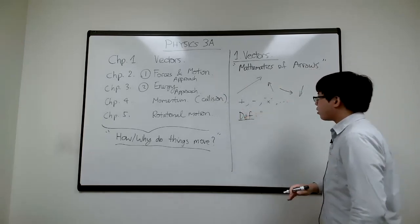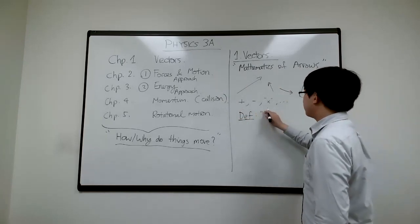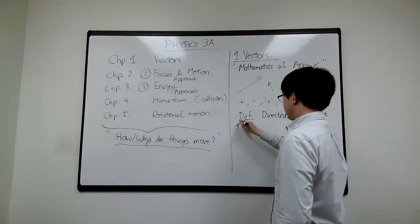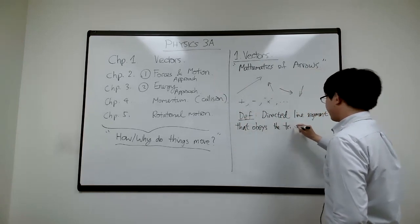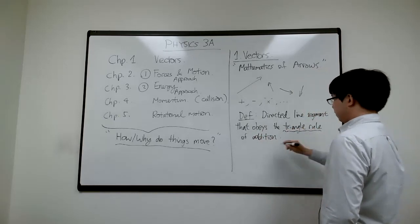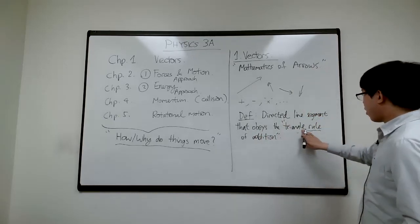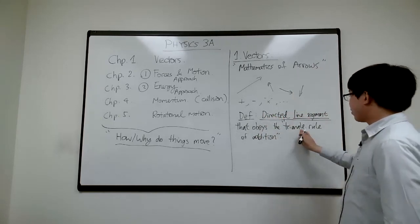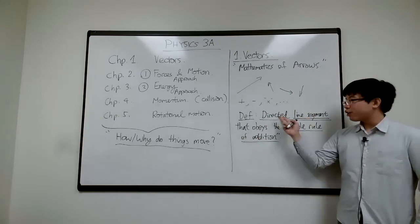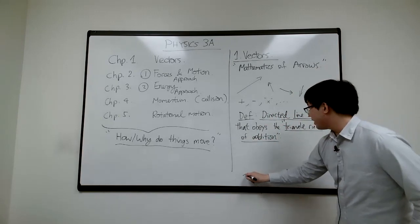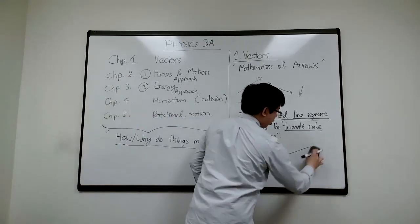The formal definition: a vector is a directed line segment that obeys the triangle rule of addition. A line in mathematics extends to infinity on both sides. A line segment is a finite one that has a starting point and an ending point. A directed line segment is a line segment with a direction — hence, an arrow. That's all a vector is.